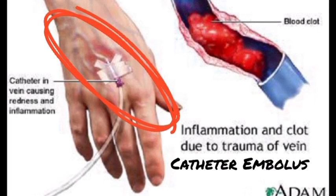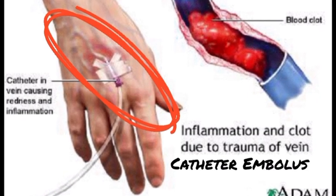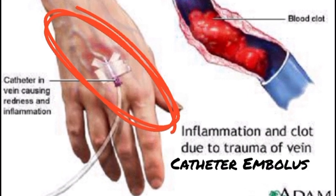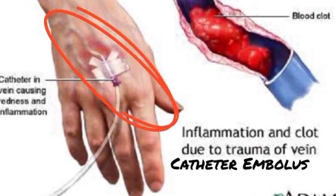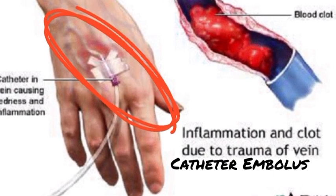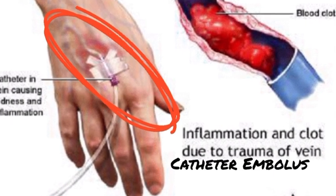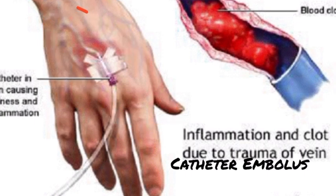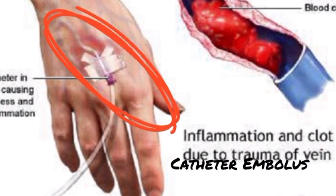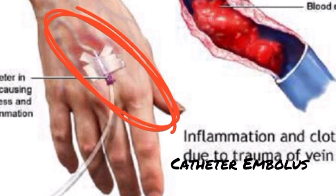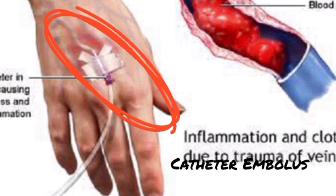The next IV complication is catheter embolus. Catheter embolus can be treated by placing a tourniquet above the site to limit blood flow and catheter particle migration.